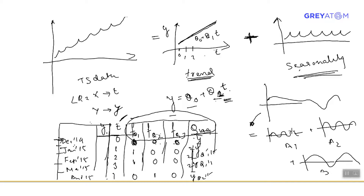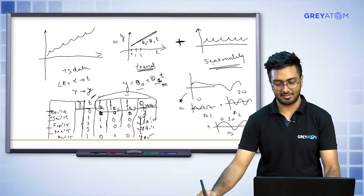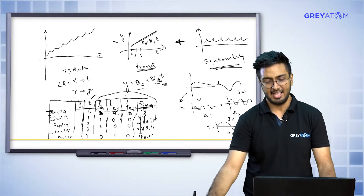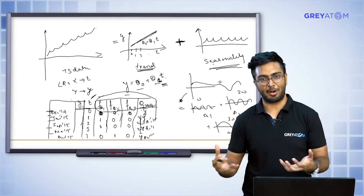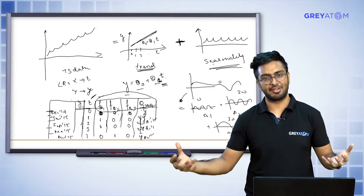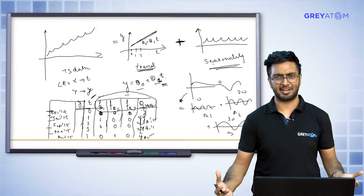These are at different frequencies — if this frequency is omega, this is 2-omega, this is 3-omega, and so on. So basically, Fourier transform is taking any signal and breaking it down into multiple component signals of varying frequencies. That's what Fourier transform is all about.